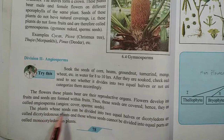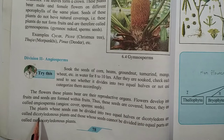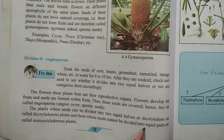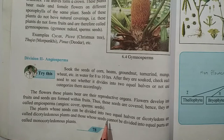The plants whose seeds can be divided into two equal halves or cotyledons are called dicotyledonous plants. And those whose seeds cannot be divided into equal parts are called monocotyledonous plants. So, dicotyledonous means the seeds we can divide into two equal halves, and those we cannot divide are called monocotyledon.